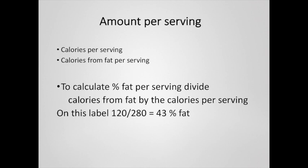The amount per serving of things like fat can be used to figure out the percentage of fat in the food. This food specifically has 120 calories from fat, so 120 calories out of 280 calories is a 43% fat food. Despite the fact that the type of fat is more important than the amount, something that is 43% fat is probably quite unhealthy — I think this is something like ice cream.